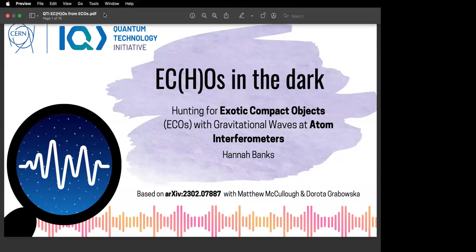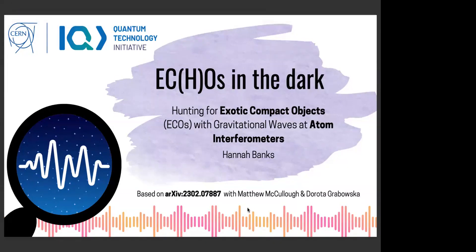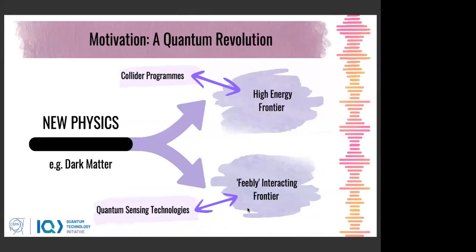There is an abundance of evidence for new physics beyond the standard model. One of the biggest puzzles with the standard model of particle physics is, of course, dark matter. We've got all this evidence coming from gravity that dark matter is out there, yet despite relentlessly pursuing this for decades, we still have no idea what this is at the particle level. This is making up 85% of the matter in the universe — quite a sobering thought.